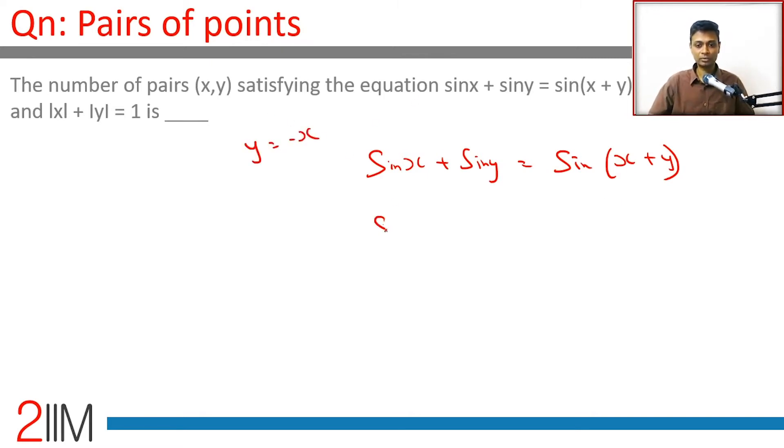Let's put y = -x. Then sin x + sin(-x) = sin(x + (-x)). This becomes sin x - sin x = sin 0, which equals 0. This works! If you put y = -x, this works fine. Very simple, wonderful idea.